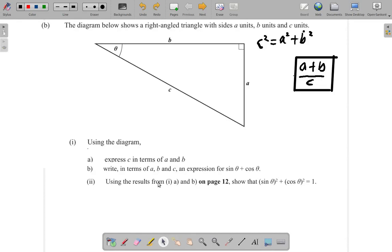Now, the next part of the question says, using the result from 1a and b on page 12 as a previous result, show that sin²θ + cos²θ = 1. I had put the previous answer up here to make space.